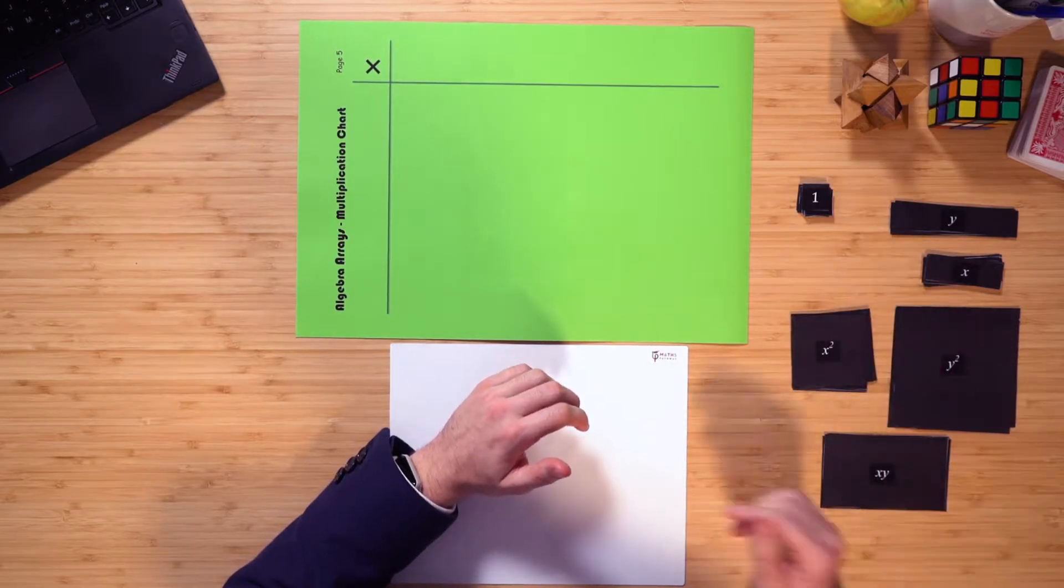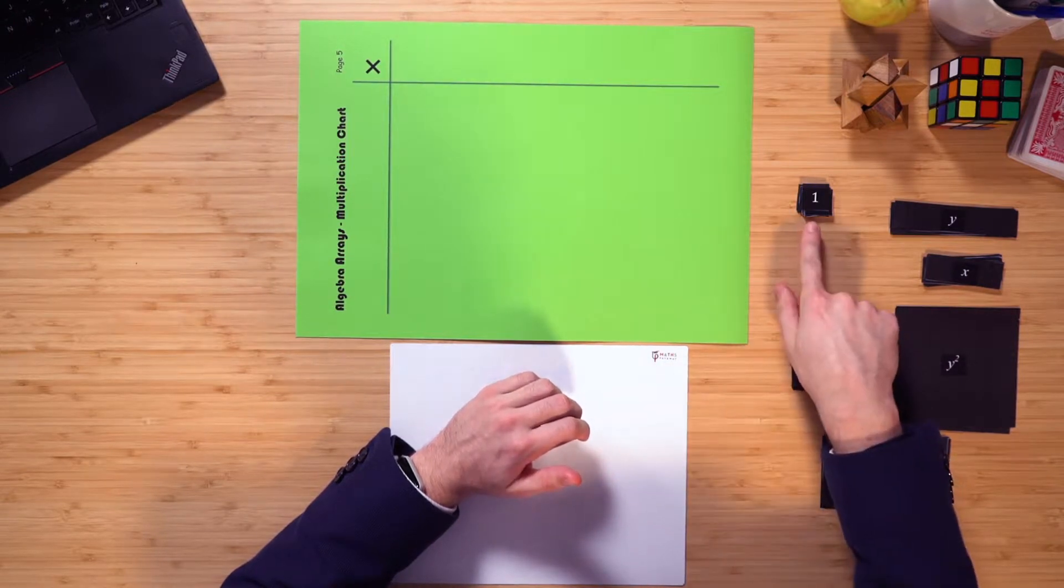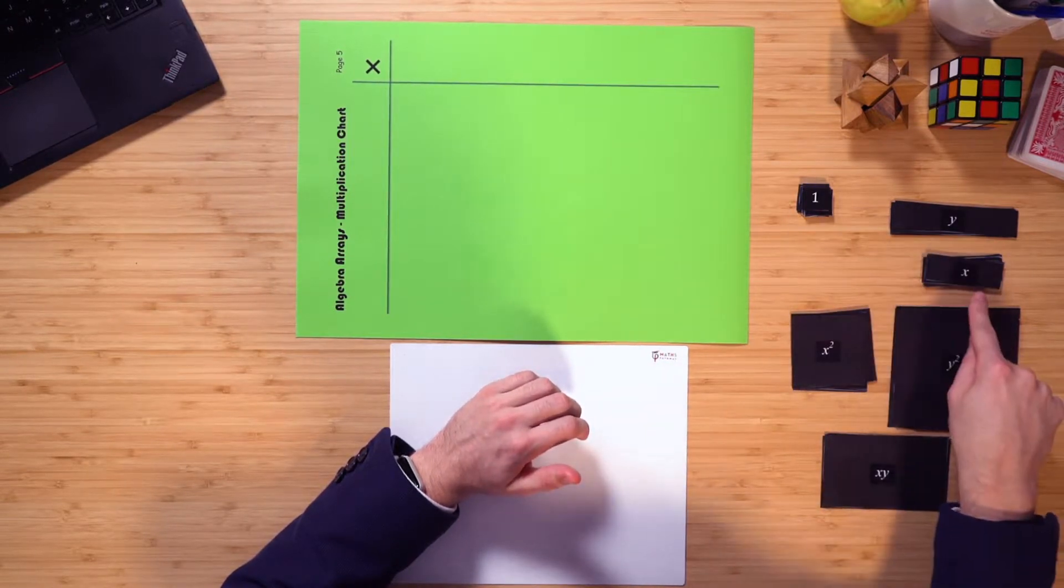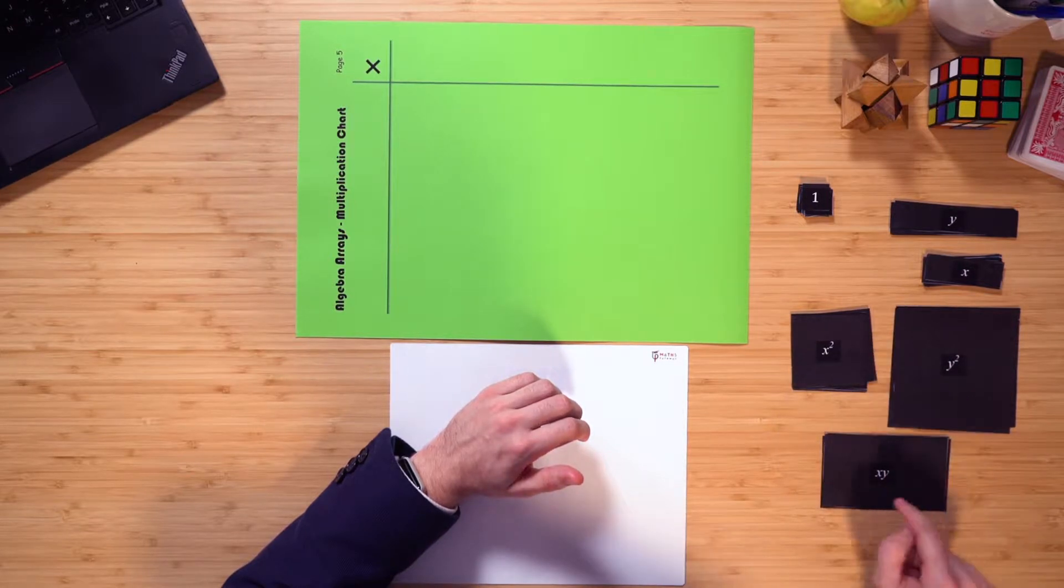As you can see here, I've got a number of different pieces. I have my ones, a y, an x, and an x squared, a y squared, and an xy. I'll show you how all of these interrelate as we go throughout the video.